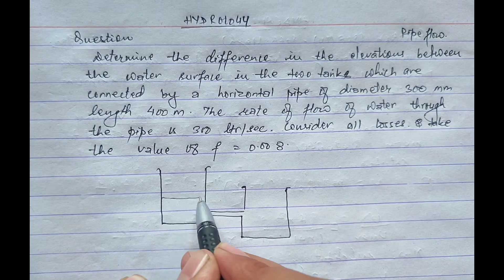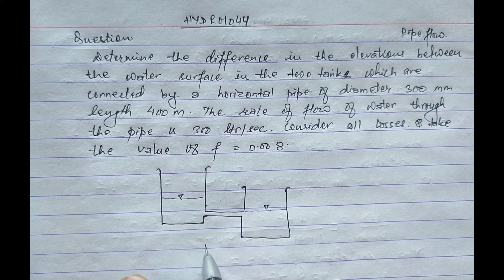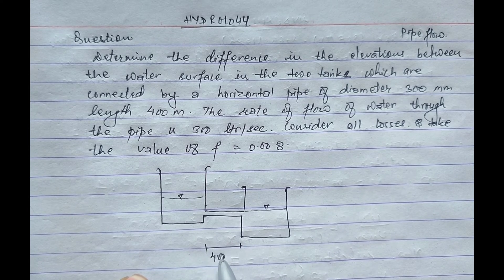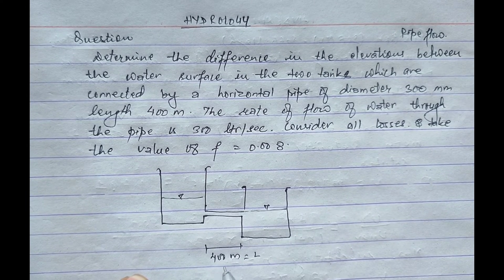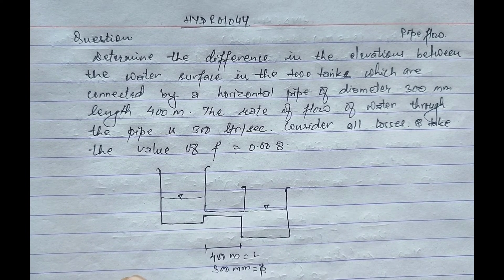The water elevation in this tank is up to this, and the water elevation in this tank is up to this. The length of this pipe is 400 meter equals L, and 300 mm equals diameter.